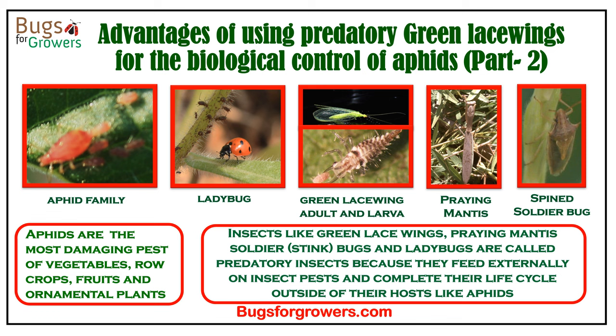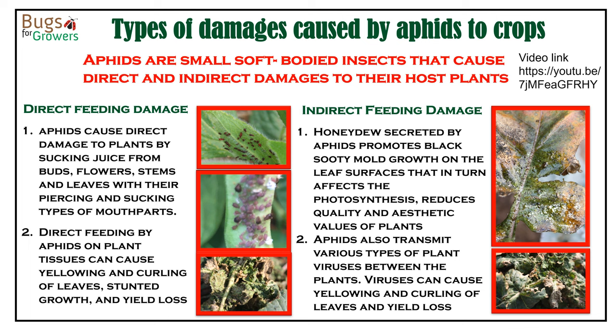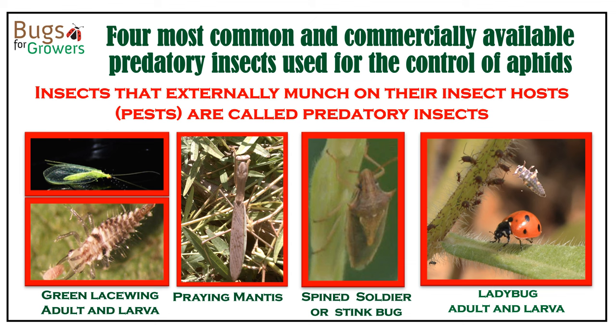Hello everyone, today I am going to talk about the advantages of using a predatory insect called green lacewings as biological control agents for the control of aphids. But before that, we will first see what we learned from my previous video on predatory insects and aphids. Specifically, we learned about the direct and indirect damages caused by aphids to different crops.